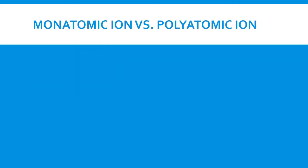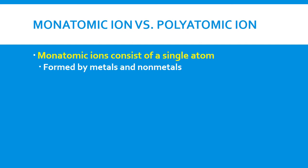We have monatomic ions and polyatomic ions. 'Mono' meaning one, 'poly' meaning many. A monatomic ion consists of a single atom, and they're formed by either metals or non-metals.